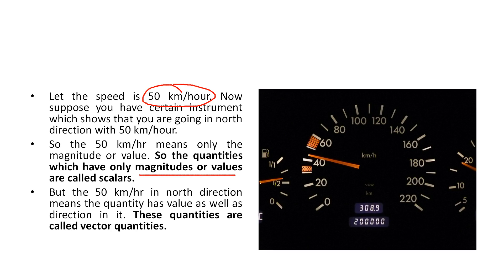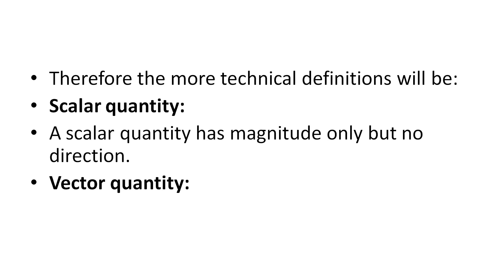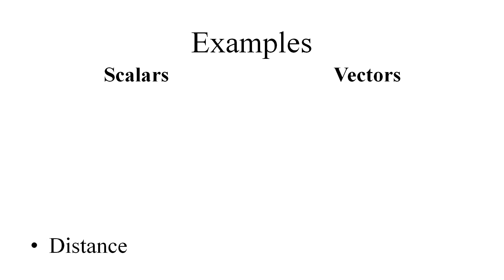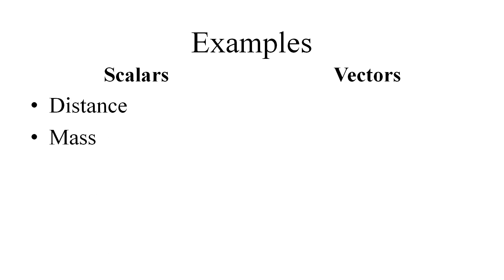So a scalar quantity has magnitude only but no direction, while a vector quantity has both magnitude as well as direction. Now for more examples: distance is a scalar, mass is a scalar.